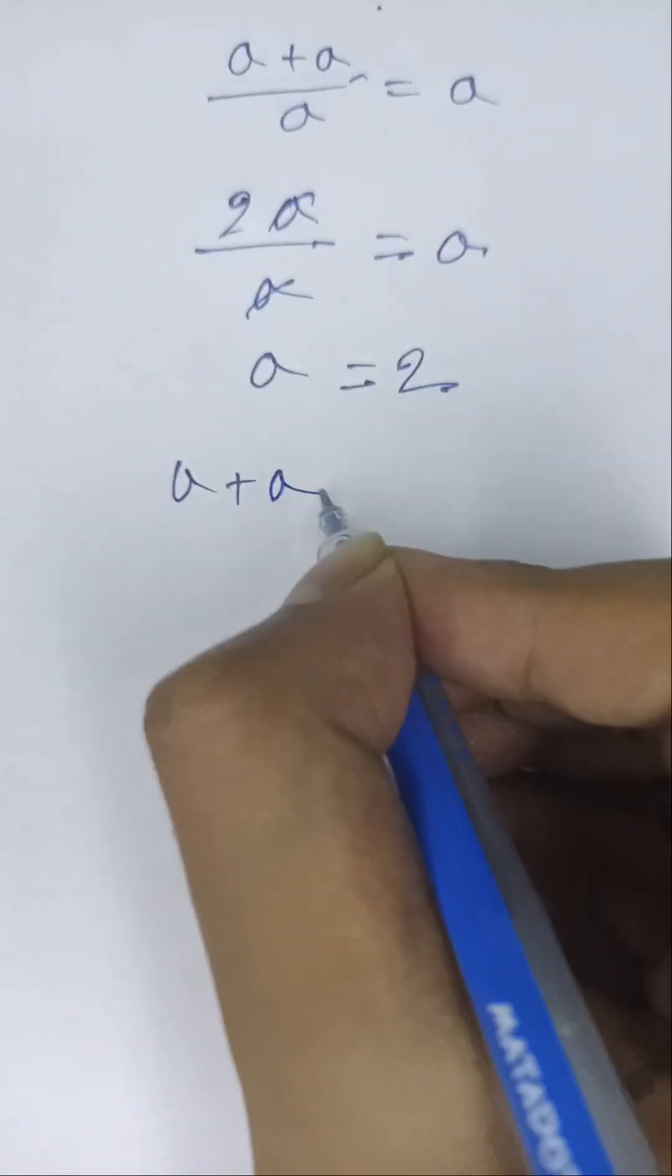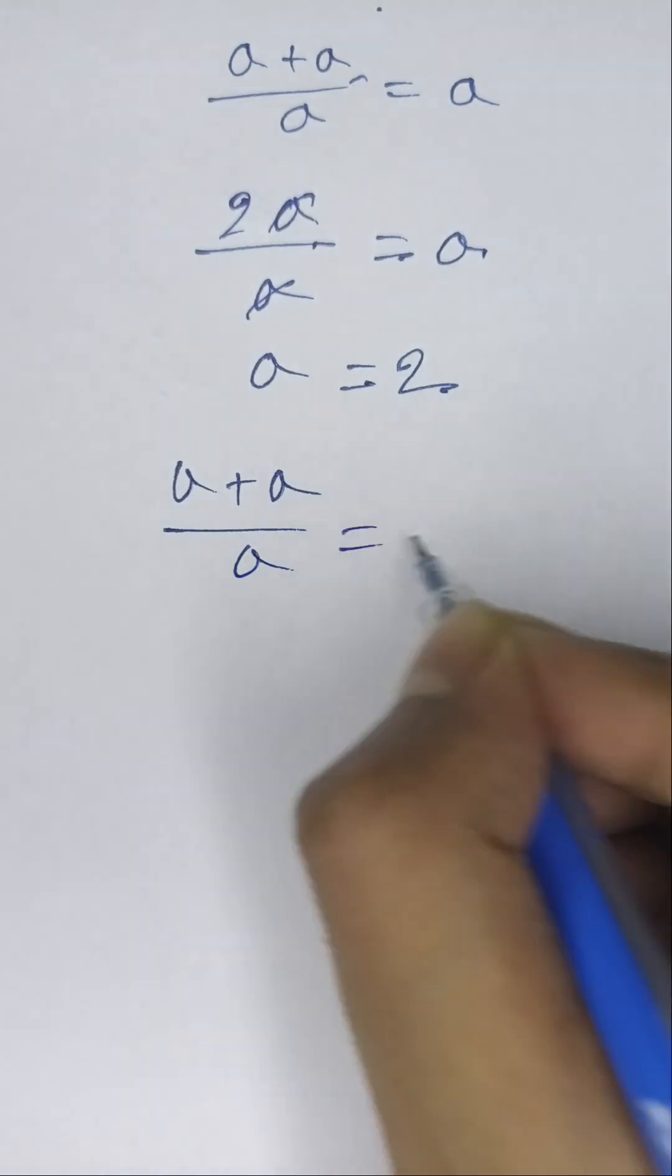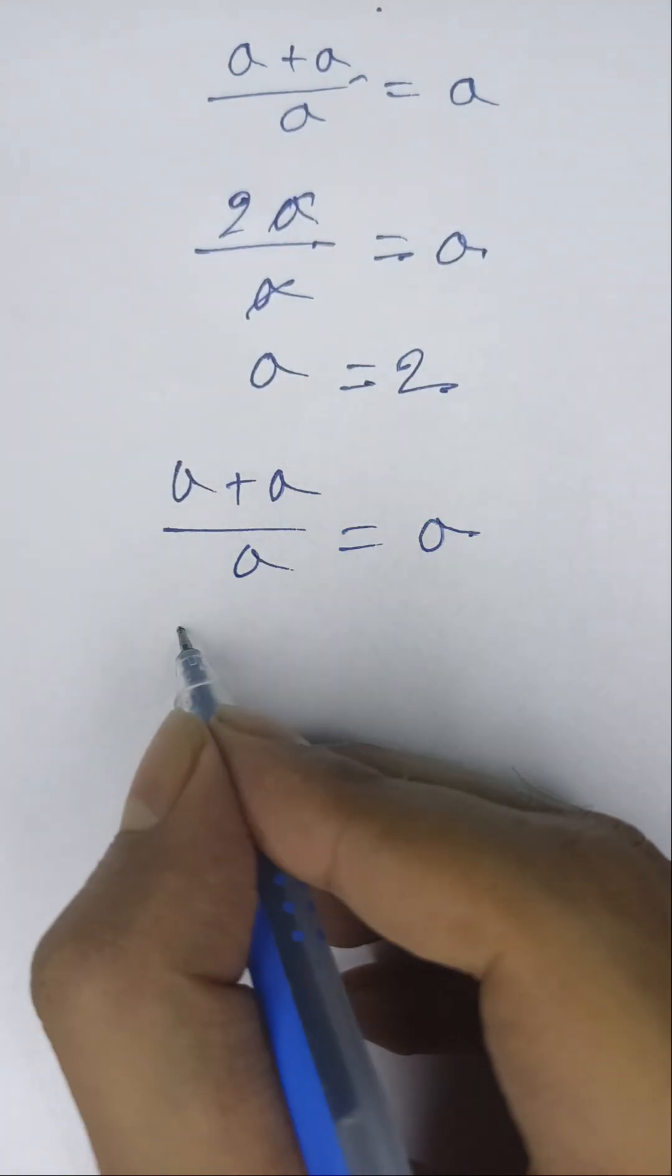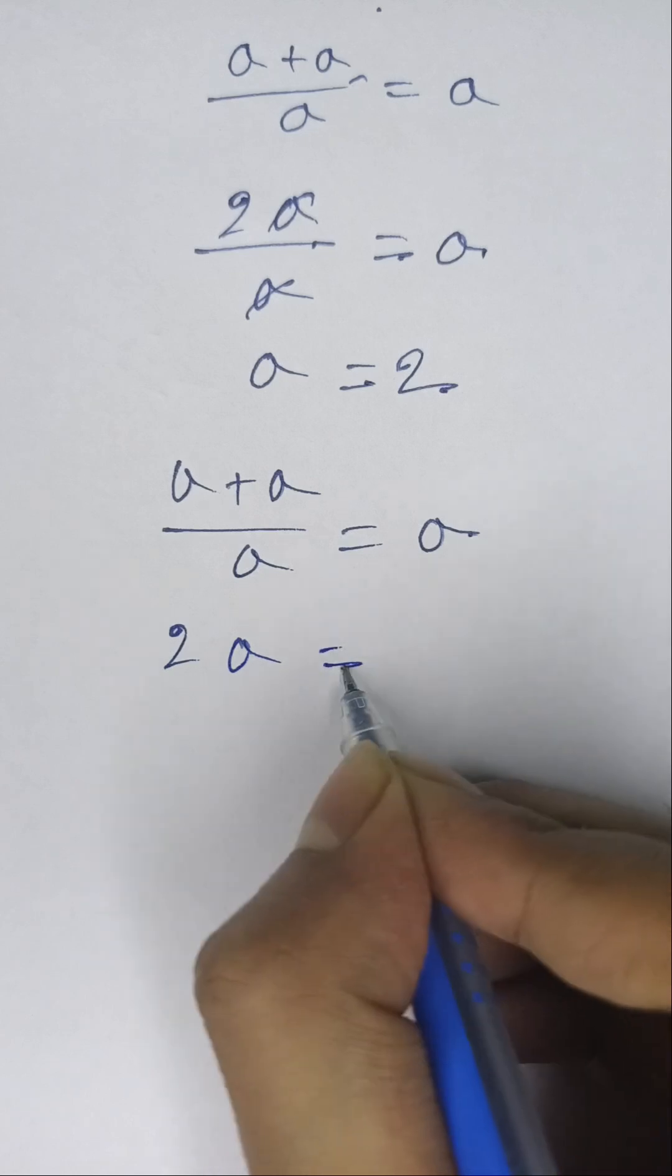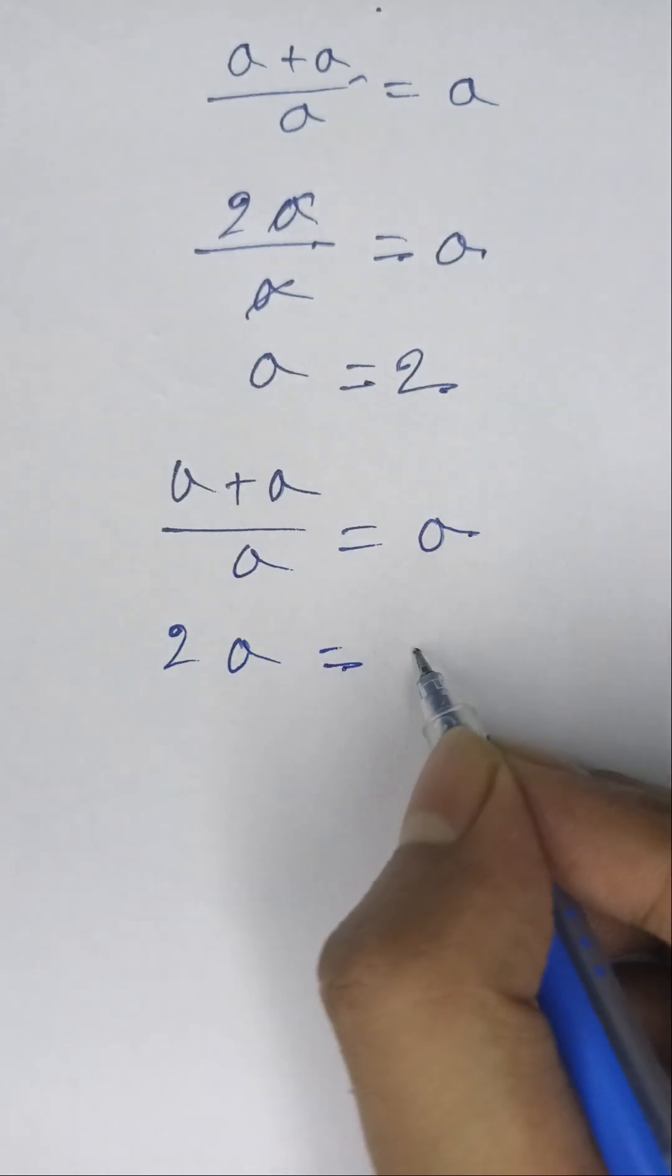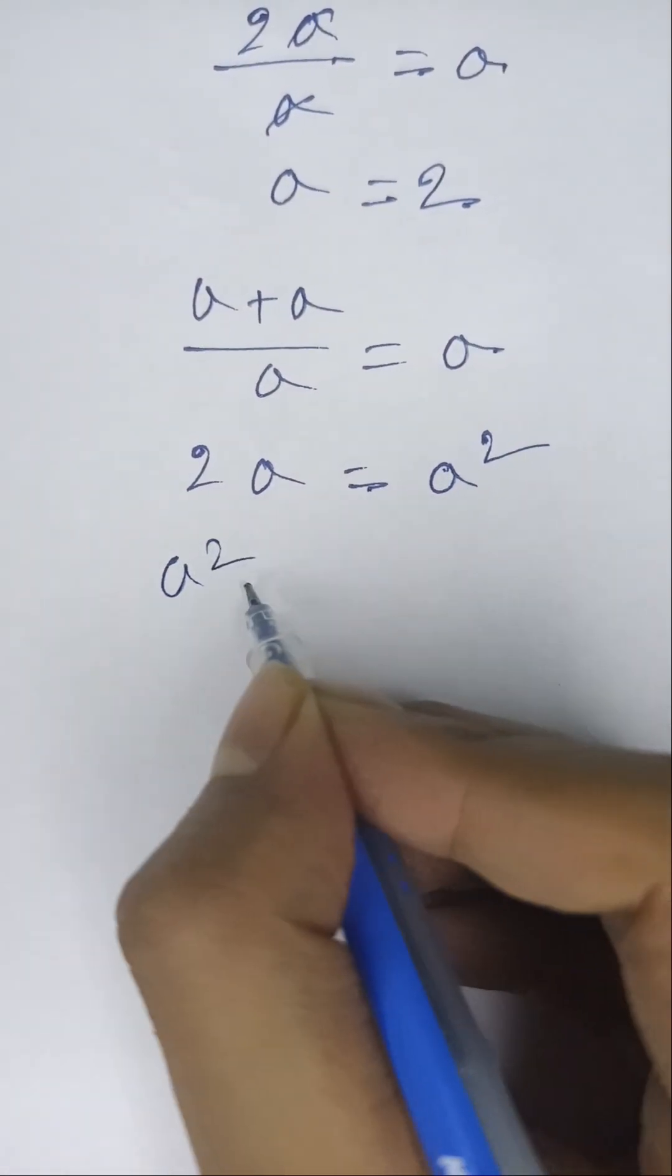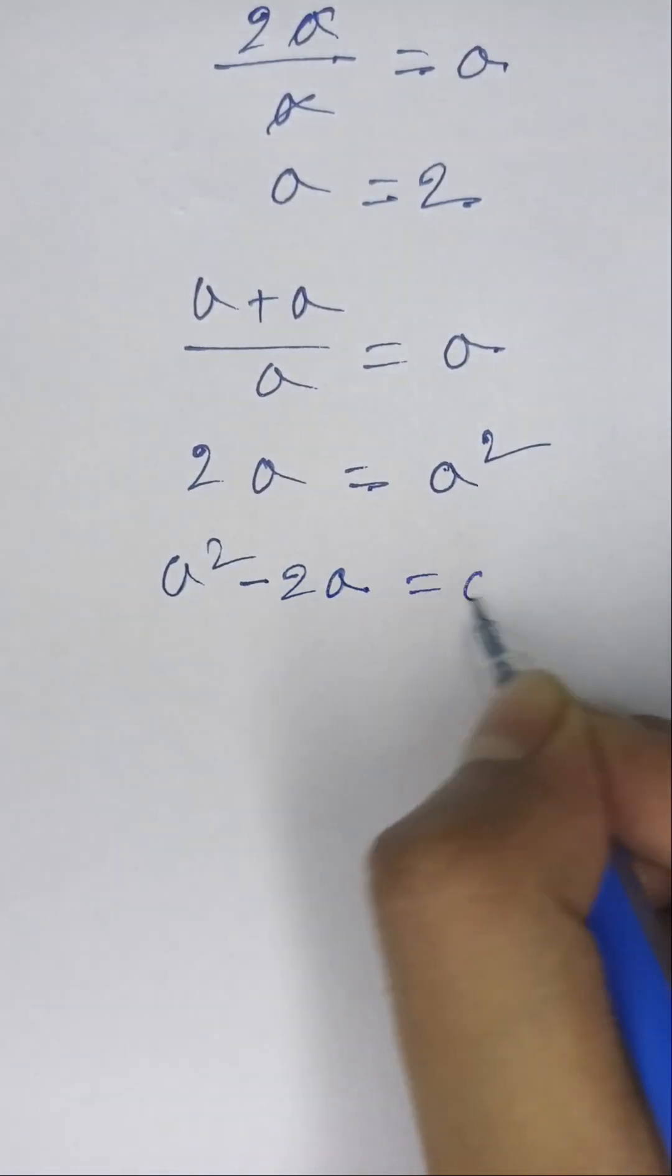Here (a + a)/a = a. Then a plus a will be 2a equals a times a, which is a². Then a² - 2a = 0.